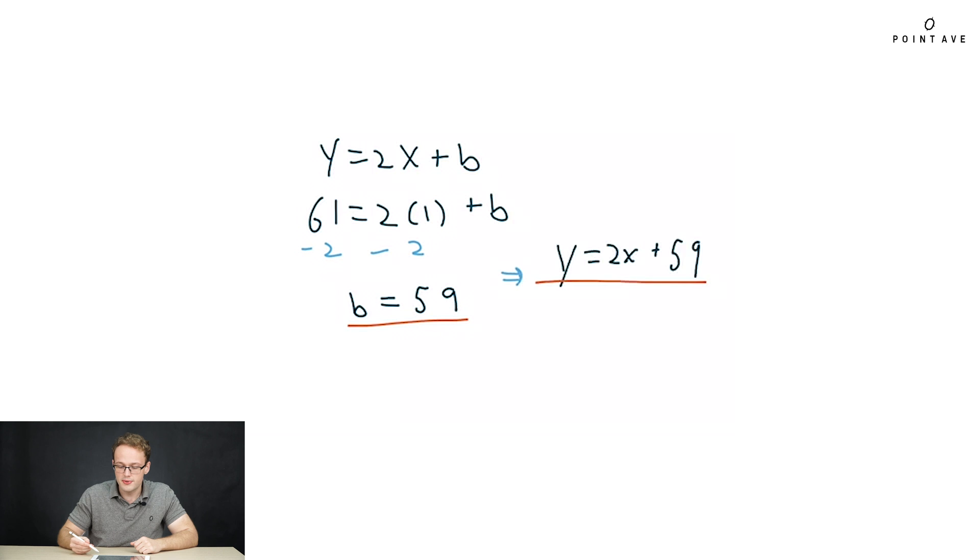So putting it all together, we get our final equation here, y equals 2x plus 59. So lastly, what does this b value mean in context? Well, this tells us that when x equals 0, y is 59. So in the year 2010, our tickets cost exactly $59.